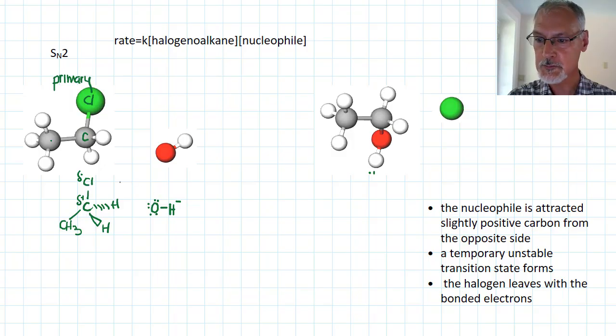Now, it's unable to approach from above because this is negative, and this is negative, and it would be repelled. So this actually comes up underneath the molecule to come to that slightly positively charged carbon. So make sure your curly arrow shows this.